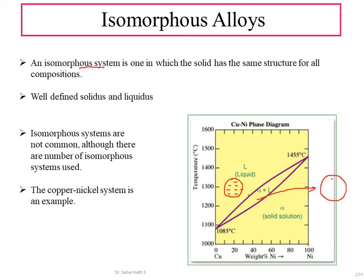Within this two-phase region, as temperature goes down, nucleation will happen. All nucleation will form alpha phases. So throughout this region we have liquid plus solid phases — it is a mixture of solid and liquid. The condition is that whatever solid crystals or nucleation happen, all will be of the alpha phase.